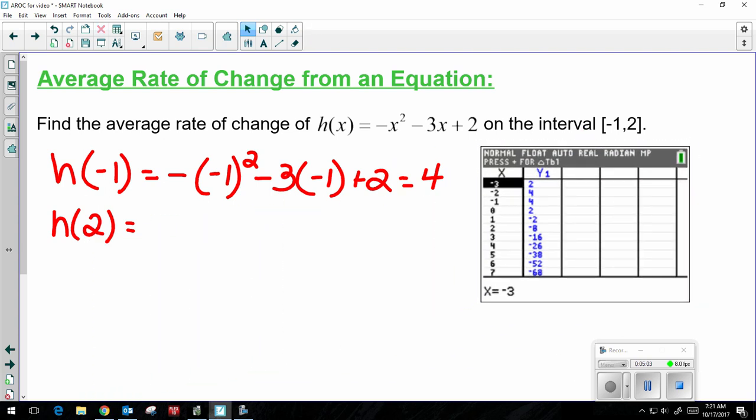So here's my table of values. I do the same thing I did before. Negative 1, 4, and 2, negative 8.